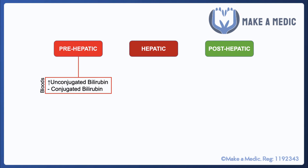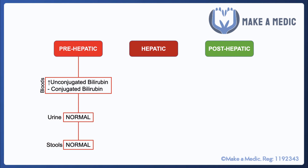With pre-hepatic jaundice, the main problem is too much bilirubin being generated by the breakdown of red blood cells, exceeding the liver's capacity to metabolize and excrete it. This gives an increase in unconjugated bilirubin with a normal conjugated bilirubin level. The urine will be normal because unconjugated bilirubin is insoluble and won't be excreted in the urine. The liver and GI tract are intact, so there's no reason for dark urine, and stools should be normal.